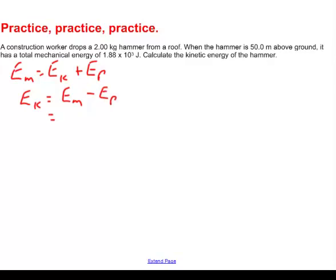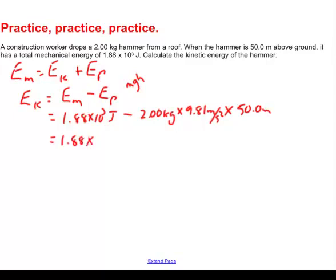Well, I know what the mechanical energy is. It's 1.88 times 10 to the third joules. They gave me that one. Take away the potential. Now, how do you find potential? Potential is mass times gravity times height. Okay, the mass was 2.00 kilograms. Gravity on Earth is 9.81 meters per second squared. And the height of the hammer was 50.0 meters above the ground.